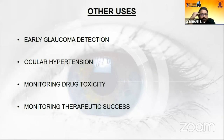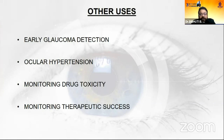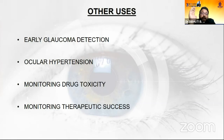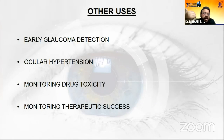Other clinical uses for general ophthalmologists include: early glaucoma detection, where N95 would be affected; optic nerve stress in ocular hypertension, where N95 would be affected; monitoring drug toxicity where the macula is affected and P50 would be impacted; and monitoring therapeutic success — for example, in a choroiditis involving the macula where drugs are being administered.